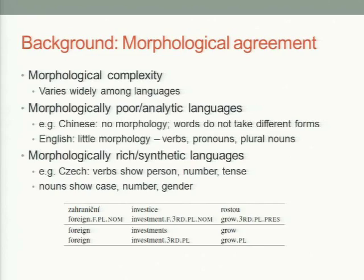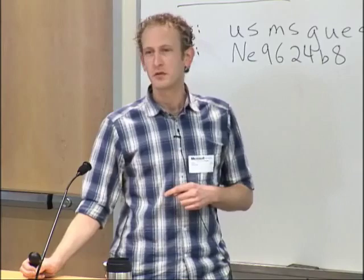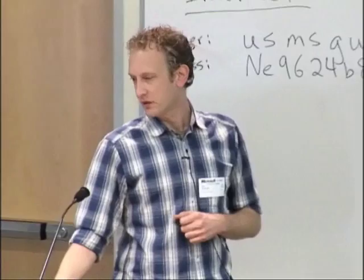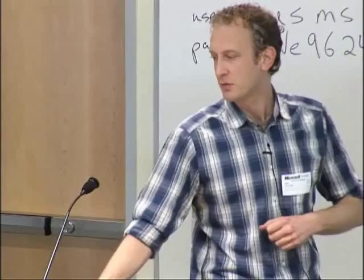To give some background on morphological agreement, there's the idea of morphological complexity, which varies widely across languages. It refers to the amount of different forms a word can take depending on case, number, tense, and other factors. At one end of this spectrum we have morphologically poor languages — a canonical example is Chinese, which doesn't really have any morphology. Words don't take different forms depending on number or person.